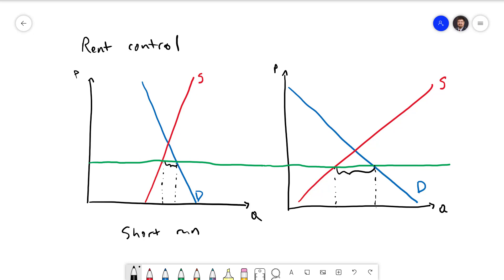Long waiting lists, lotteries, or even worse, discrimination. For example, families with children might be discriminated against. There might be racial discrimination and things like that.